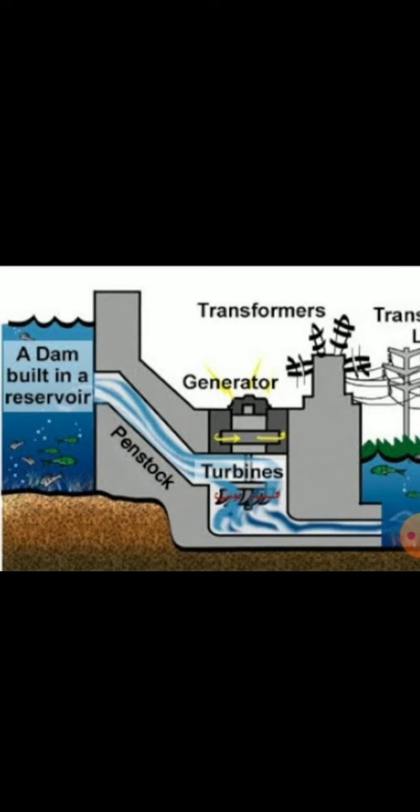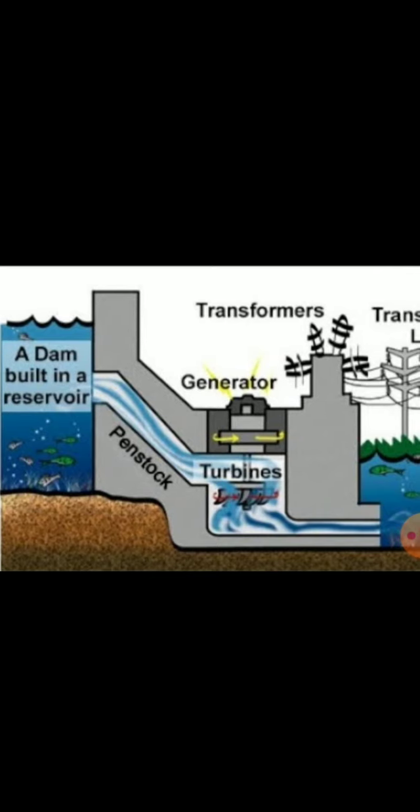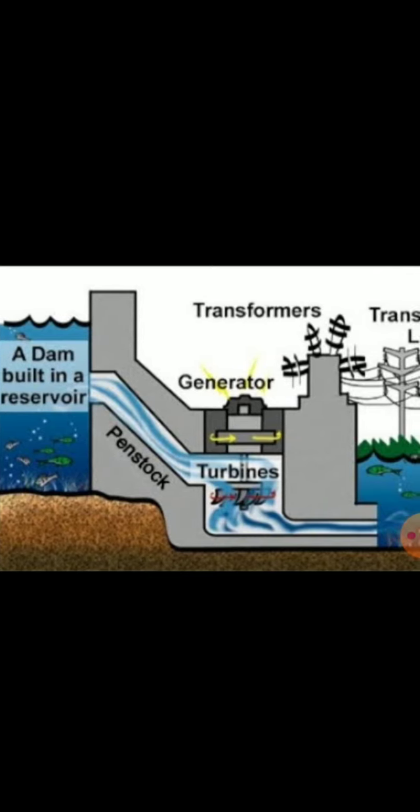The water is made to fall from a great height in a dam to generate electricity. This type of electricity is called hydro-electricity or hydro-power. These dams are also multi-purpose projects, meaning they are used to generate electricity as well as supply water to fields through canals.